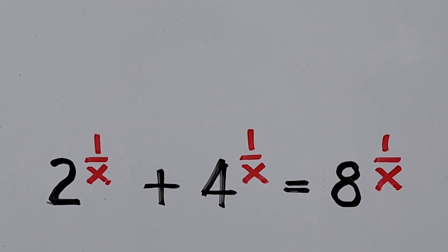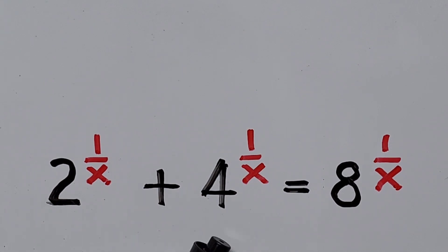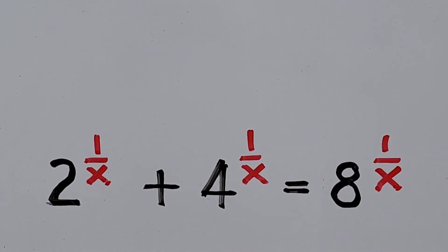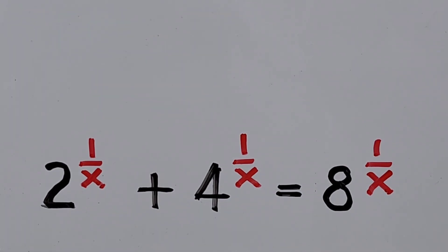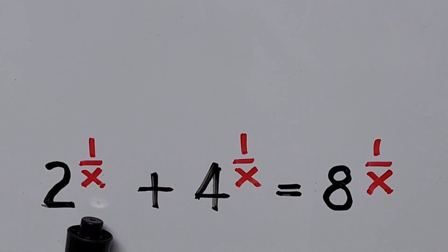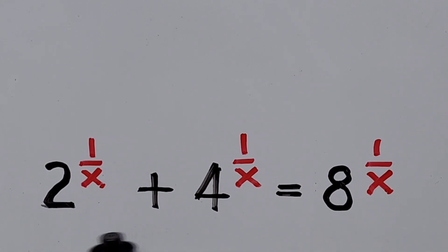Hello everyone. We have here the exponential equation 2 to the power of 1 over x plus 4 to the power of 1 over x equals 8 to the power of 1 over x. In this video we'll be solving for the real values of x. This equation may look familiar, but the difference is that the exponent is the inverse of x. If you notice, the bases are all even numbers and 4 and 8 are multiples of 2.